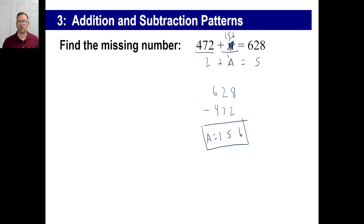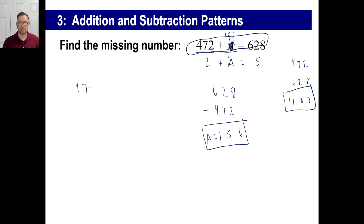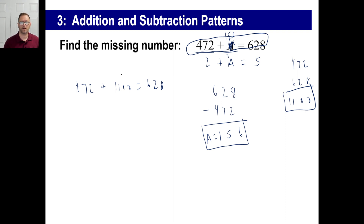Now, if you did it wrong and went, I think I have to add 472 plus 628, and got 1,100 — go back and check it. The problem is 472 plus A equals 628. You can look at that and go, oh no, that's not right. I should have subtracted. That's okay — you'll get quicker at these.